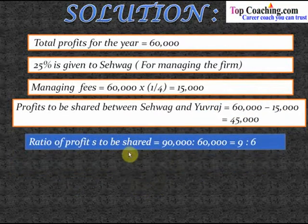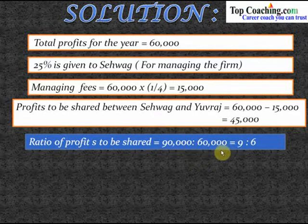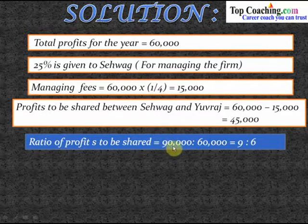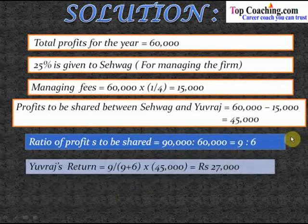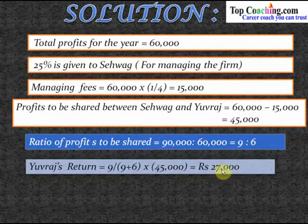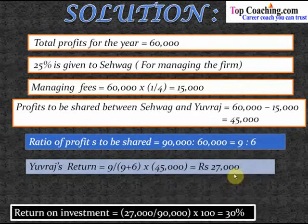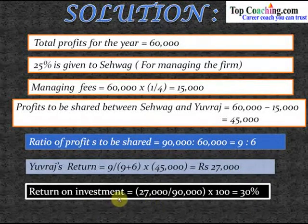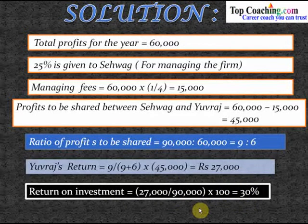The ratio of profits to be shared is ninety thousand to sixty thousand, which simplifies to nine to six. Therefore, Yuvraj's return is nine divided by fifteen (nine plus six) multiplied by forty-five thousand, which equals twenty-seven thousand rupees. The return on investment is twenty-seven thousand divided by ninety thousand multiplied by one hundred, which equals thirty percent. Yuvraj gets a return of thirty percent on his investment.